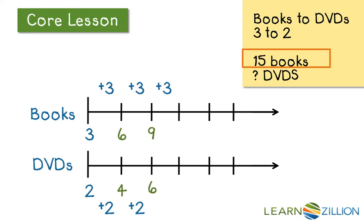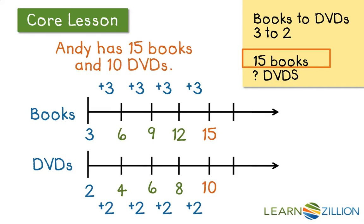And we can continue this pattern, so on and so forth, until we get to the point where we have 15 books and 10 DVDs. And we can then answer that when Andy has 15 books and 10 DVDs, that fits the scenario that we were given because we wanted to know how many DVDs he had when he had 15 books.